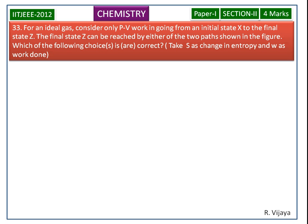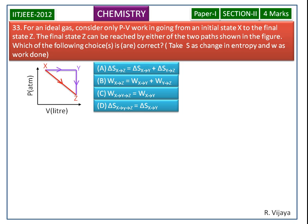For an ideal gas, consider only PV work in going from an initial state X to the final state Z. The final state Z can be reached by either of the two paths shown in the figure. Which of the following choice is correct or choices are correct? Take S as change in entropy and W as work done.